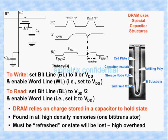Here we have a detailed diagram of the capacitor and transistor. The word line is connected to the transistor's gate terminal; we consider one terminal as the source and the other as the drain. One of the terminals is connected to the bit line, and the capacitor is connected at the other side. These are the timing diagrams related to this cell.